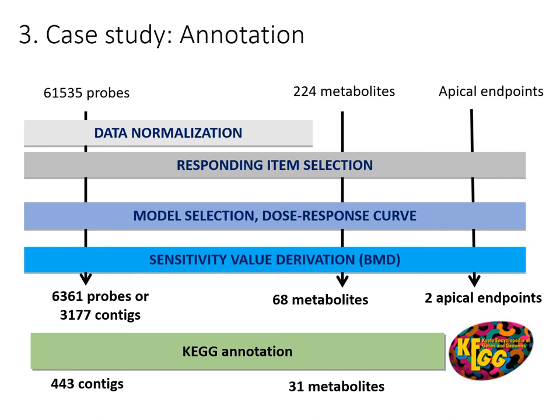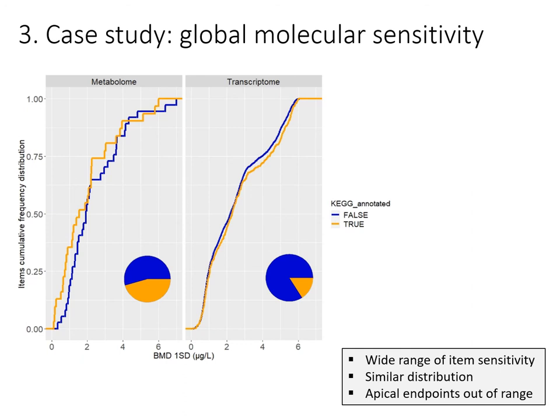KEGG annotations are related to metabolic pathways. Regarding the results: first, we assessed the global molecular sensitivity of the microalgae by fitting the sensitivity distribution of each gene and metabolite selected by DROMIX. Both metabolites and genes exhibit a wide range of sensitivity and both distributions are really similar. Apical endpoints exhibited a lower sensitivity with BMD values completely out of range, so we decided to remove them from this analysis.